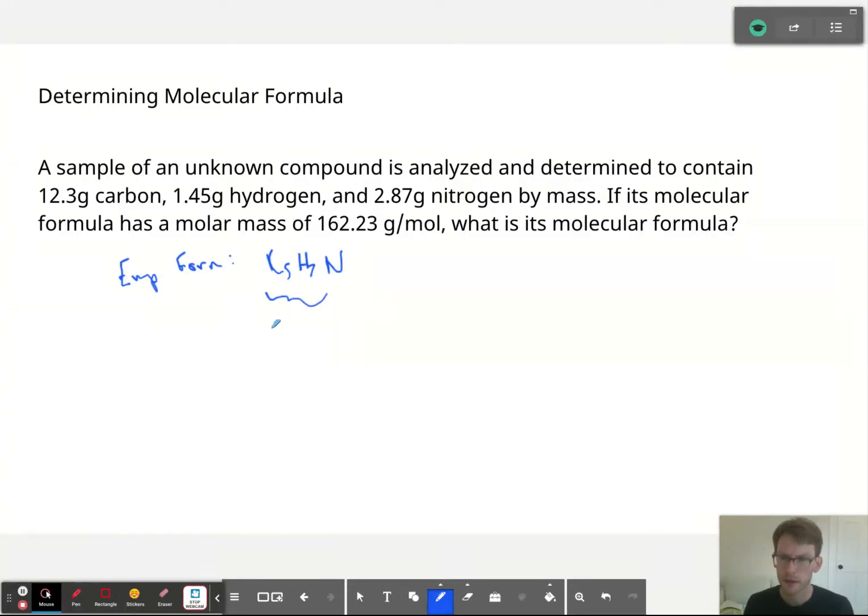So we have 5 times 12.00 plus 7 times 1.01 plus 1 times 14.01. This is just 5 atoms of carbon times the molar mass of carbon, 7 atoms of hydrogen times the molar mass of hydrogen. You get it by now. So we have essentially 60 plus 7 plus 7 plus 14. So this is going to be 60 plus 14 is 74, plus 7 is 81. So we have 81.02 and that is the molar mass of the empirical formula.